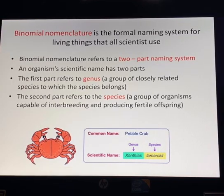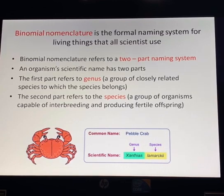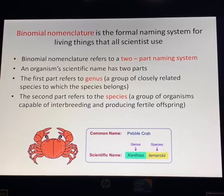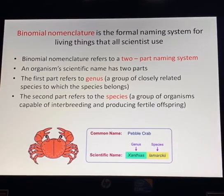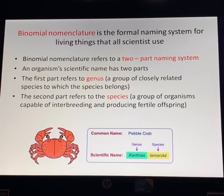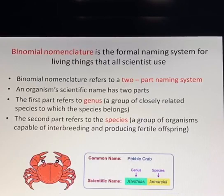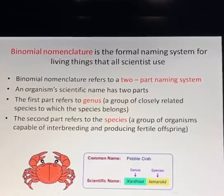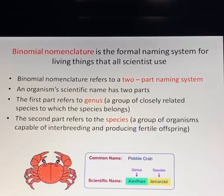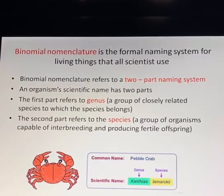The first part refers to the genus and the second part refers to the species. Genus is a group of closely related species to which the species belongs. And species, as you all remember from the previous lesson, is a group of organisms capable of interbreeding and producing fertile offspring. In this picture we can see a crab. The scientific name of the crab is Xanthias lamarchi. You should also know that all scientific names are written in Latin.